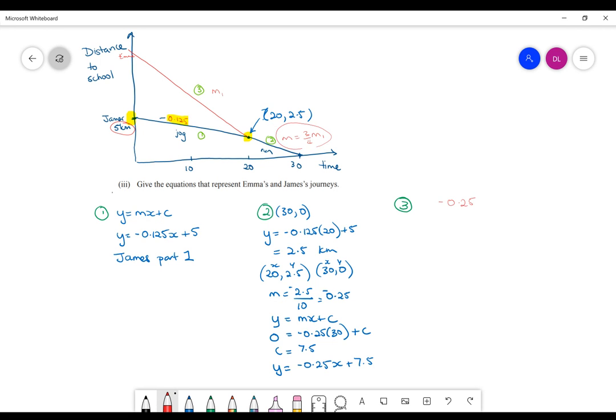Okay, so we've got the gradient here, which is going to be negative 0.25, and that's supposed to be 3 quarters of whatever that other gradient is. I'm going to call it gradient m1. So multiplying here, m1 will equal negative 0.25 times by 4 divided by 3. And that comes out to be times 4 divided by 3 is a third.